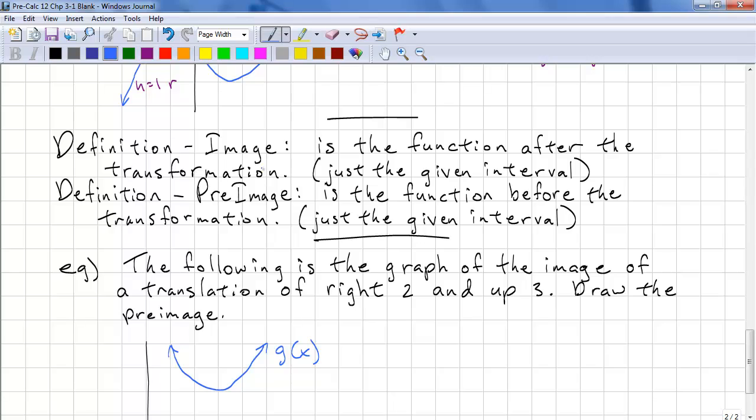Here's some definitions for you to help you understand problems. The image is defined as the function after the transformation. And the preimage is the function before the transformation. So normally we would think of this as g of x and this is f of x.